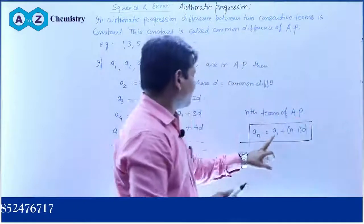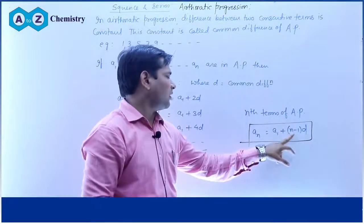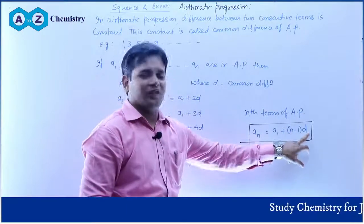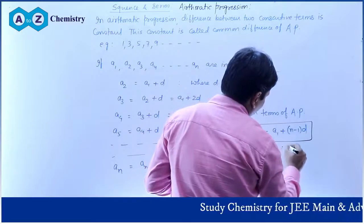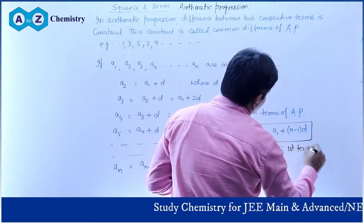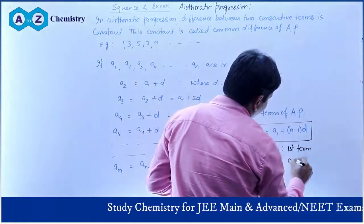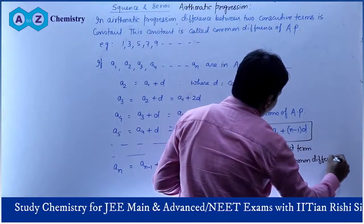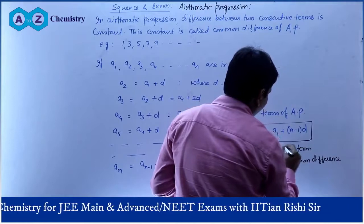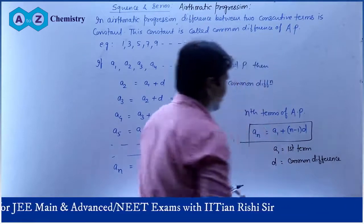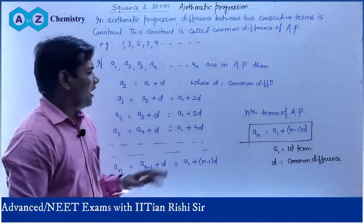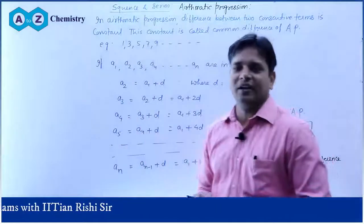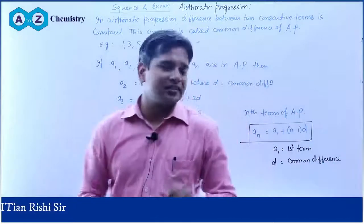So what you will do is: take the first term, plus (n−1) times d to get the nth term. This is the formula for finding any particular term of an arithmetic progression. If you know the first term and the common difference, you can easily find a₁ and d, and this gives you the nth term of the AP.